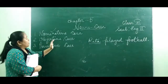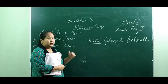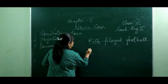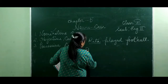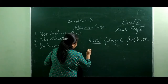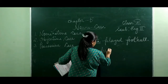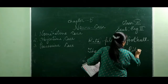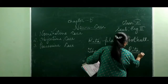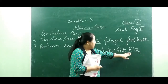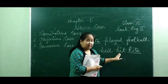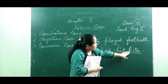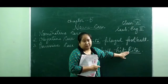Now, what is objective case? When the noun is used as an object of a verb, it is said to be in the objective case. For example, 'The ball hits Rita.' Here, the noun Rita is used as an object; she is receiving the action of the verb. So this noun is used as an object in this sentence and is said to be in the objective case.